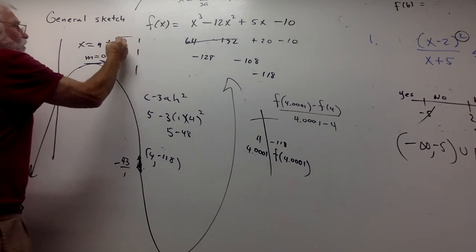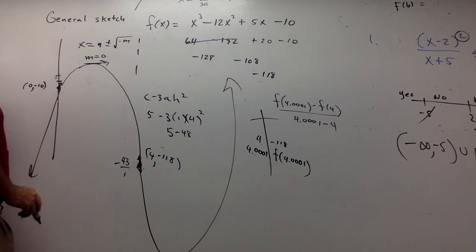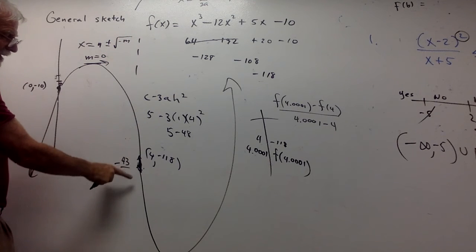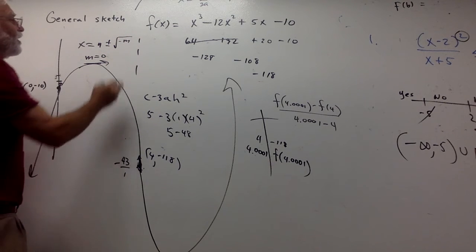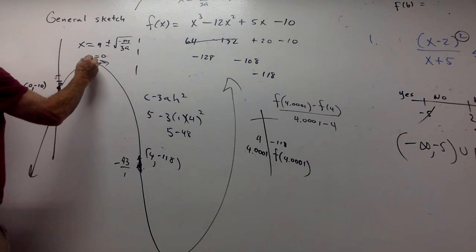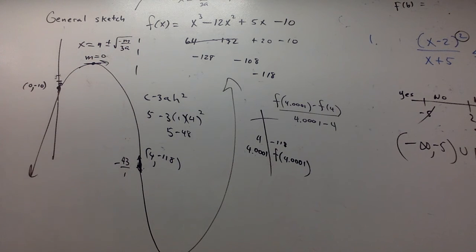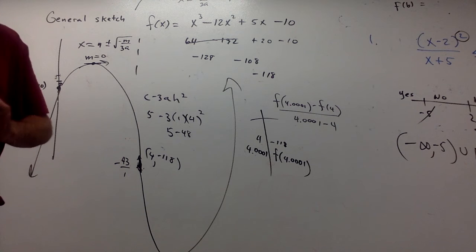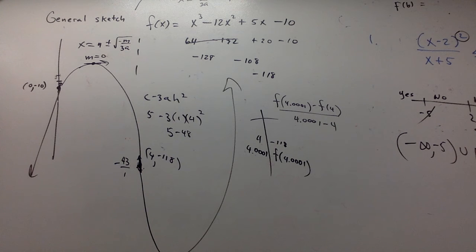And you're going plus or minus the square root of minus m, which is the slope of that value right there, over 3a. And that would get you this x value. But the world doesn't seem to know that. So you find it with calculus. You'll learn that in a future class.